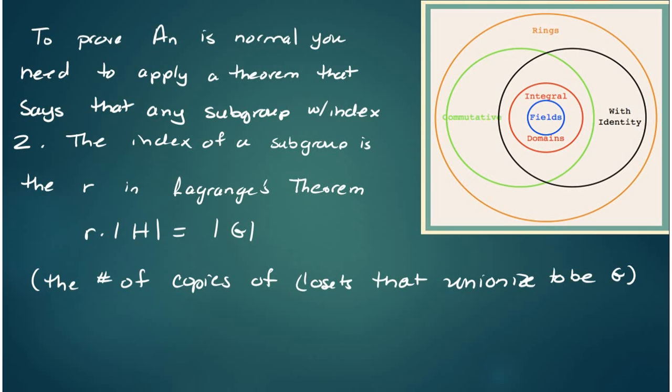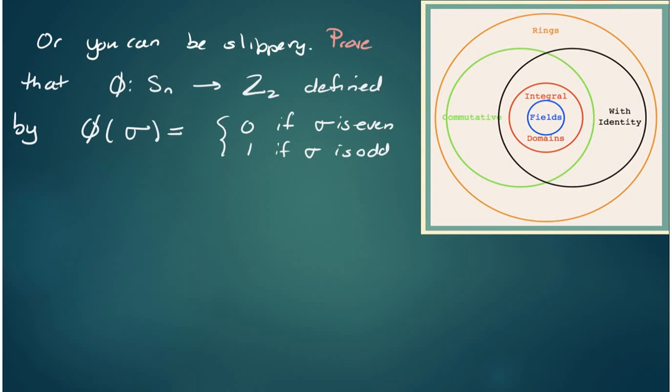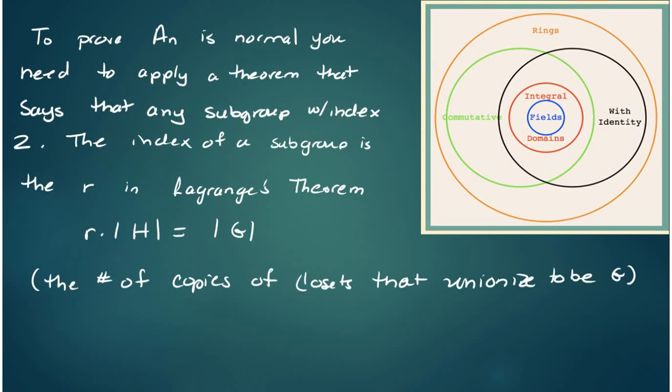But to prove A_N is normal, you could apply a theorem that says that any subgroup with index two, just to remind you the index of a subgroup is the R in Lagrange's Theorem where I proved the proof of Lagrange's theorem. It's the number of copies of cosets that union up to be G. You can apply a theorem that says whenever you have a subgroup with index 2, that subgroup is going to be automatically normal.